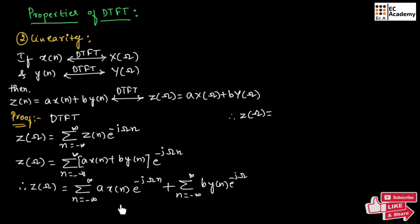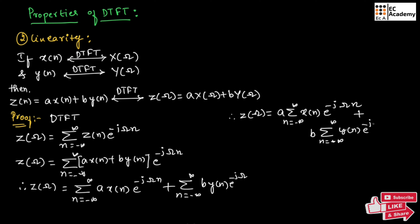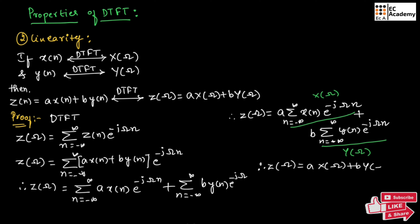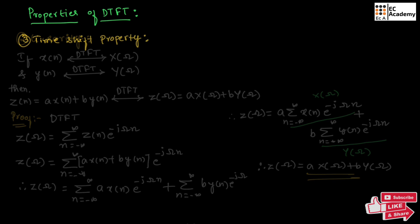So we can write the above equation as Z of omega equal to A times summation of n from minus infinity to infinity of x of n exponential to the power of minus j omega n, plus B times summation of n from minus infinity to infinity of y of n exponential to the power of minus j omega n. The first summation term is X of omega and the second summation term is Y of omega. Therefore, we can write Z of omega is equal to A X of omega plus B Y of omega. So this is the proof.